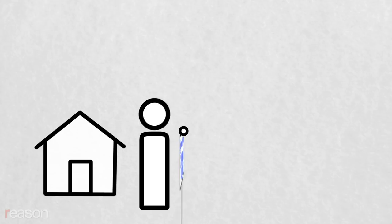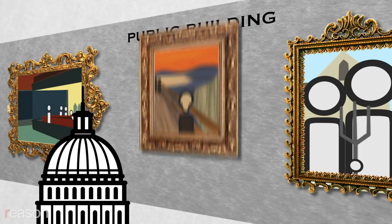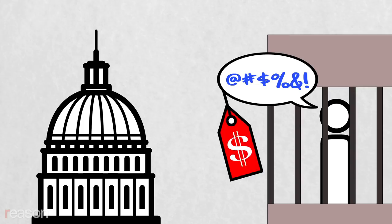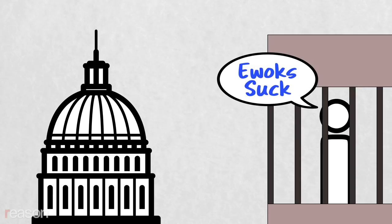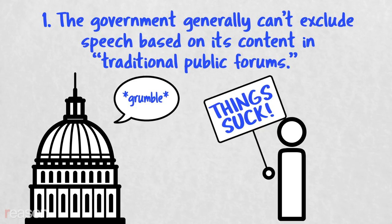Of course, private property owners aren't bound by the First Amendment, whether they're distributing money or access to real estate. And the government as property owner isn't bound by the First Amendment quite the same as it is when deciding whether to jail people or fine them for their speech. But, except when it comes to the government's own speech, viewpoint discrimination is generally forbidden even on government property.